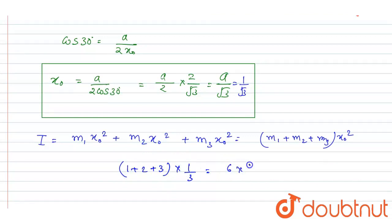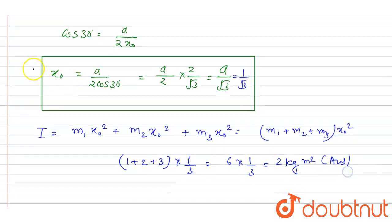So 6 into 1/3 equals 2 kilogram meter squared, and this is the answer of this question. Thank you.